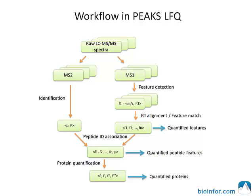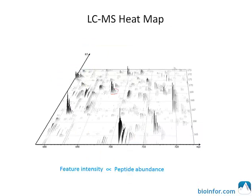Let's get more into detail for each step. In shotgun proteomics, proteins are digested into a complex mixture of peptides, which are separated by online HPLC. At a given retention time, the fractions of the mixture eluted from the column are sent to a mass spec instrument, and their precursor masses and intensities are recorded in a survey scan.